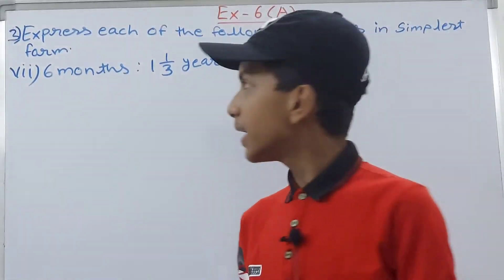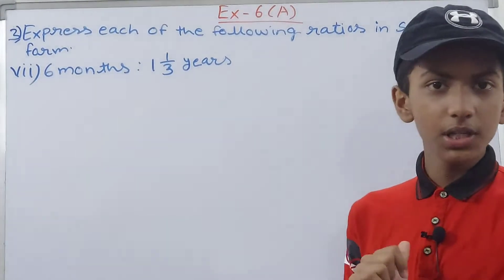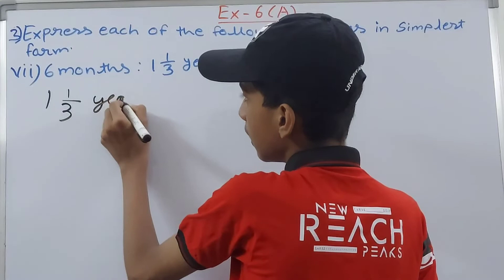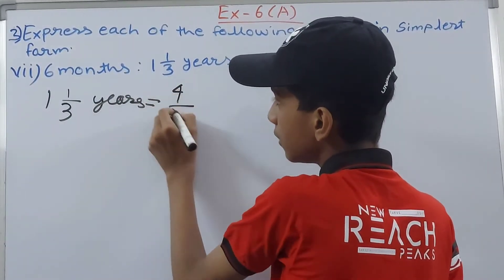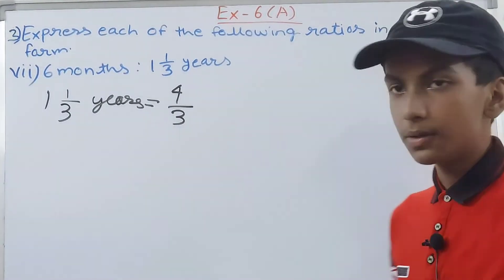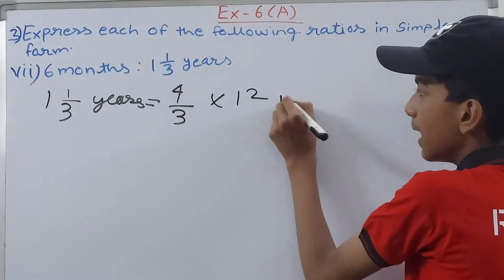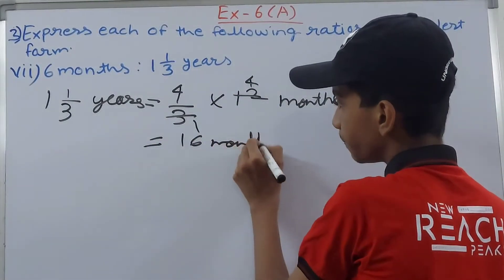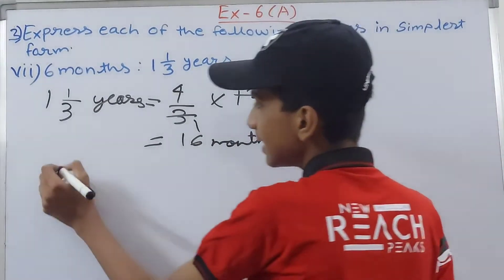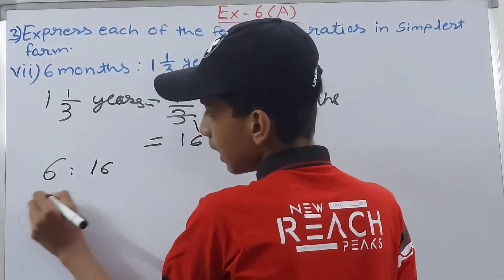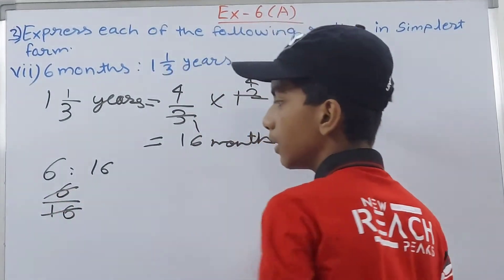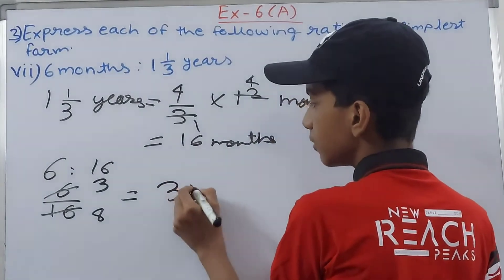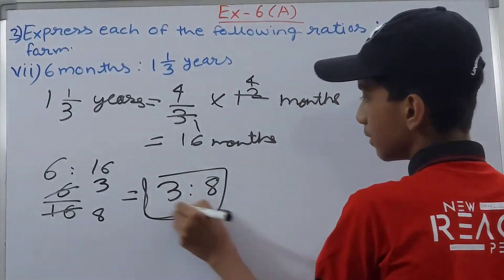Next is 6 months is to 1 whole 1 upon 3 years. 6 months will be as it is. 1⅓ years - convert this to an improper fraction: 4 upon 3. Multiply by 12 to convert to months: 4 upon 3 into 12 equals 16 months. Write this as 6 is to 16 and simplify by 2. You'll have 3 and 8. So 3 is to 8 becomes our final answer.